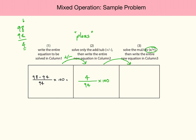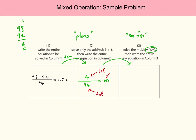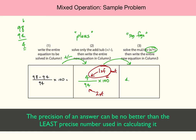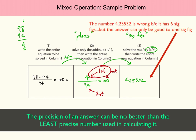The second step is where we only pay attention to the multiply/divide. But remember, the rule switches — when we deal with multiply/divide, we care about sig figs, not places. This number has only one sig fig. The 94 has two sig figs. And the 100 is exact, so we can forget about it. So our answer can only have one sig fig. Whereas before I got 4.25532, I can only keep one sig fig, so my answer becomes just a 4.